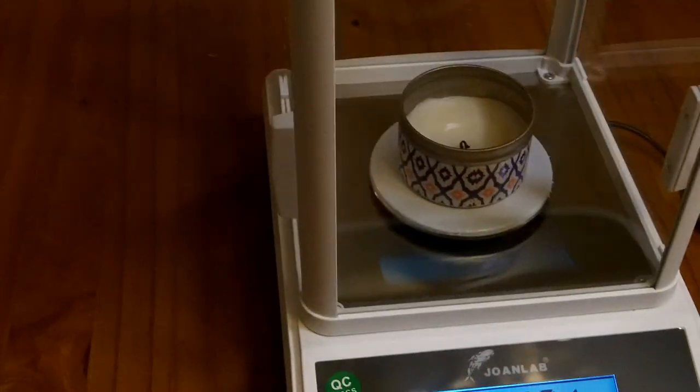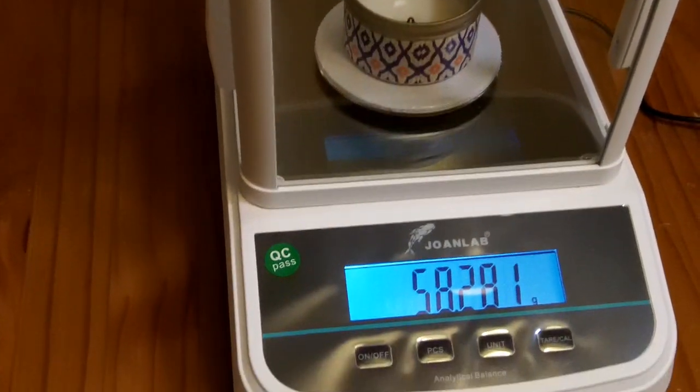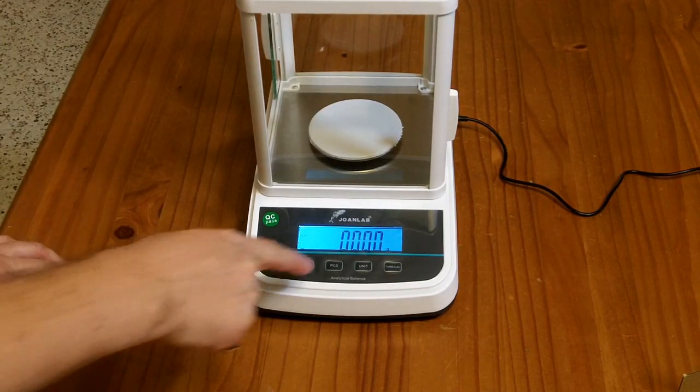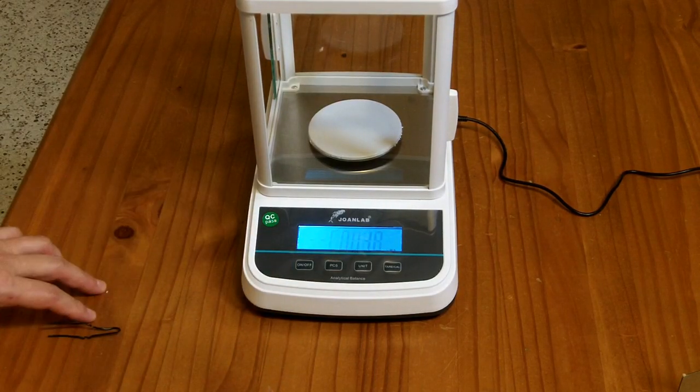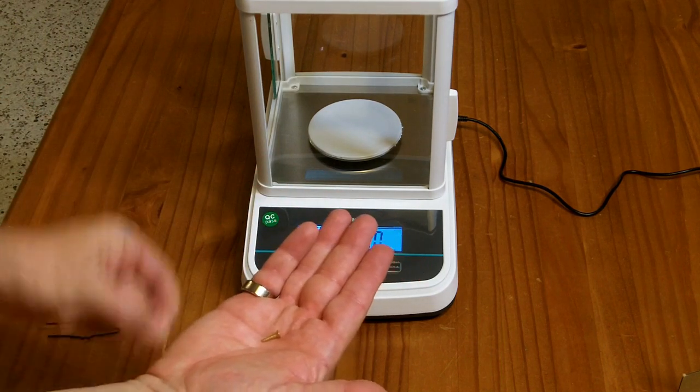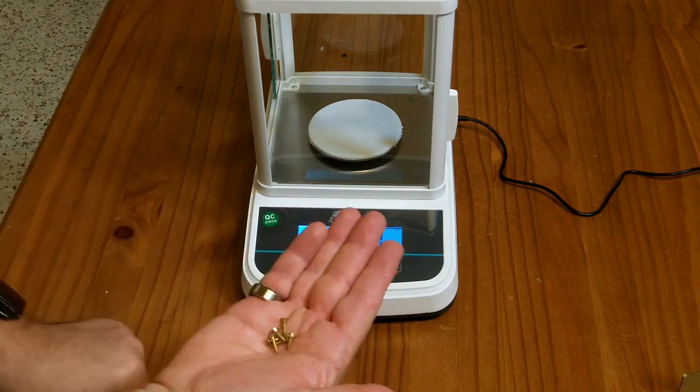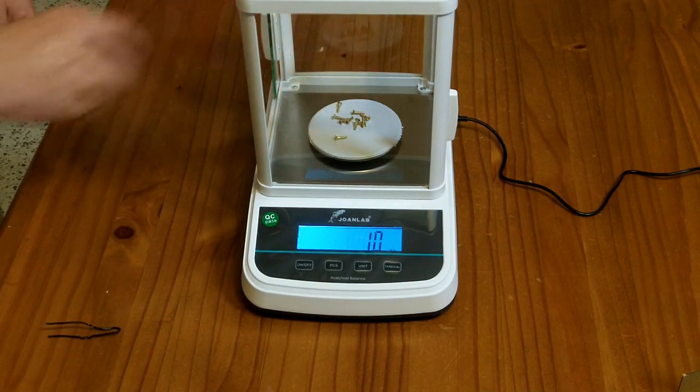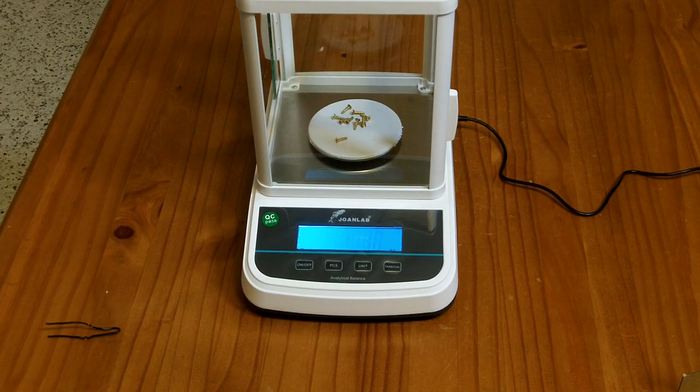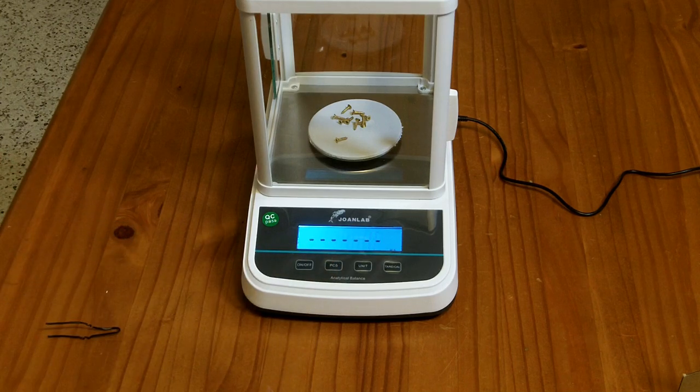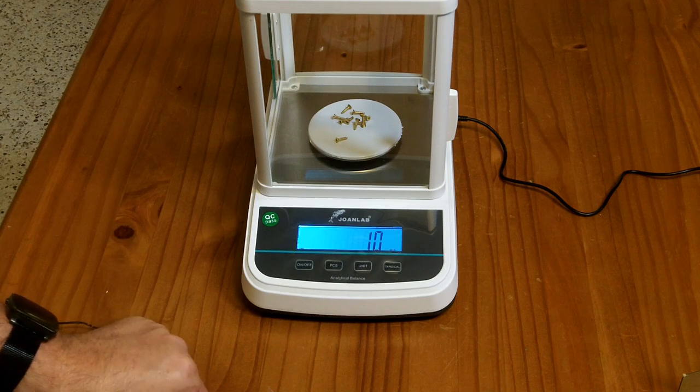So essentially, if I burnt this candle for about one or two seconds, we could have seen a change. Now it also has a count by weight mode. So you hit the pieces button and it says, hey, put 10 pieces on the scale. So you do have to count 10 initially. Then you press pieces again. Thinks about a little bit. And it says, oh, there's 10 on the scale right now.